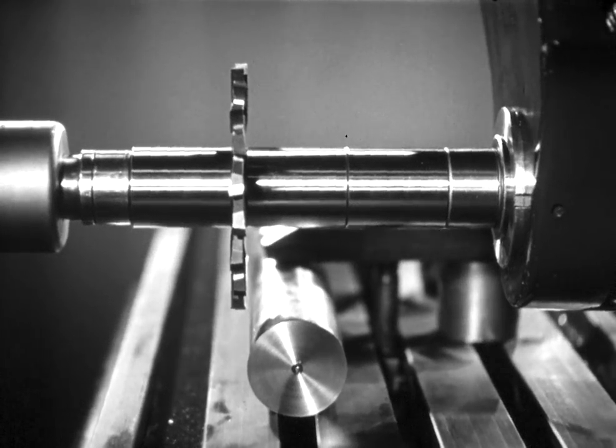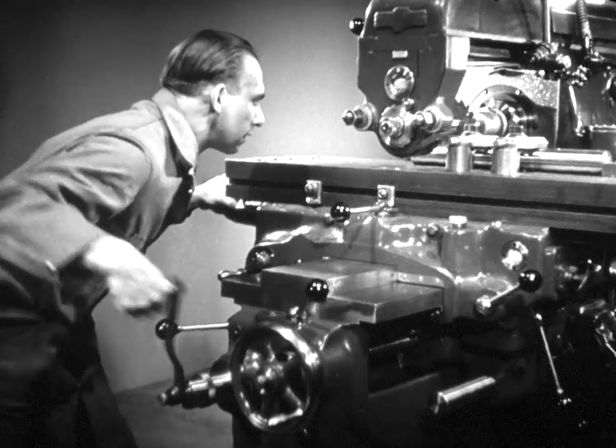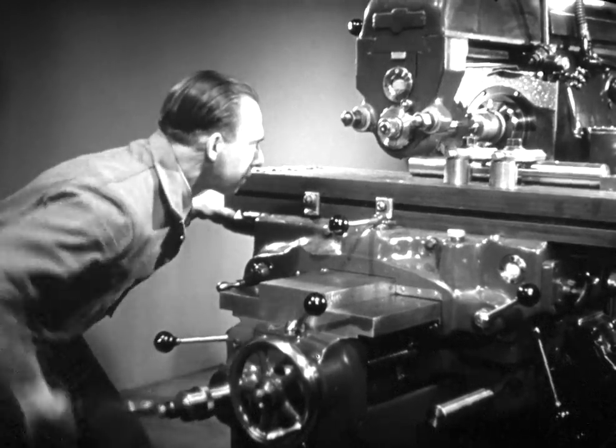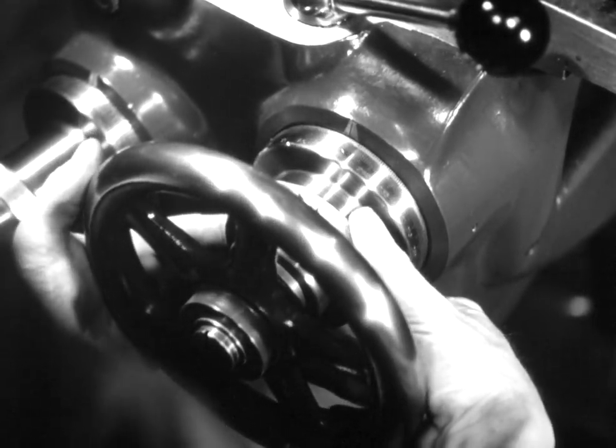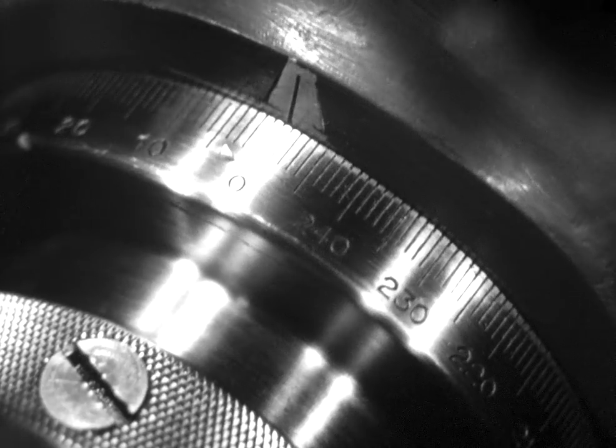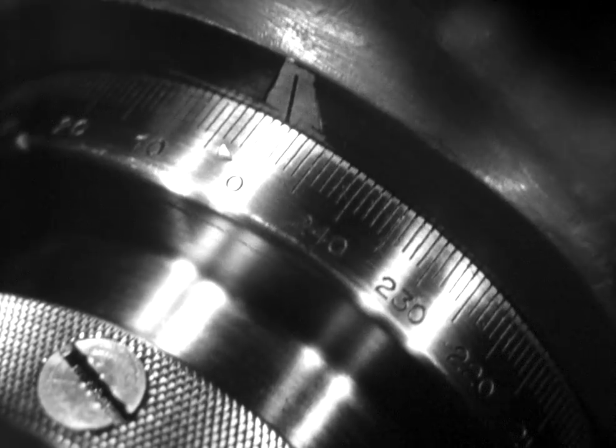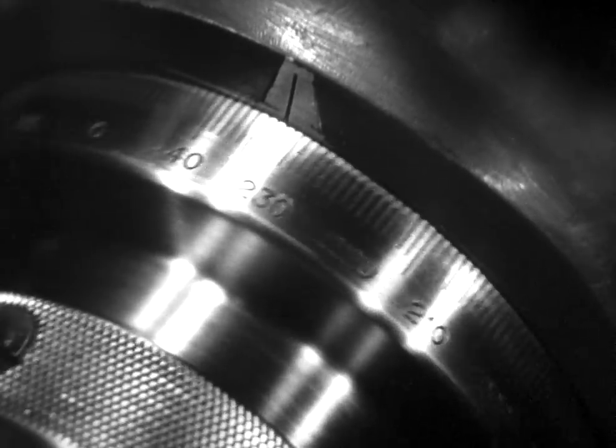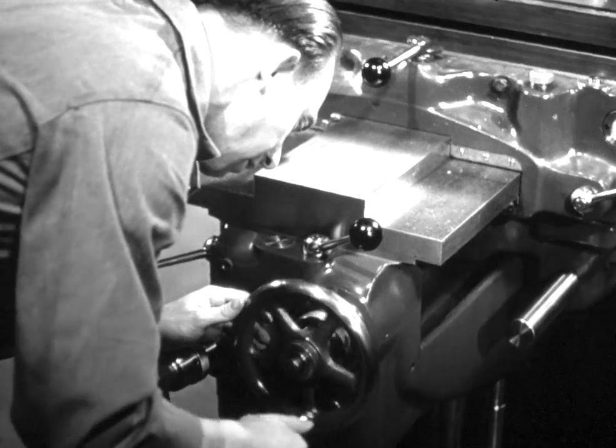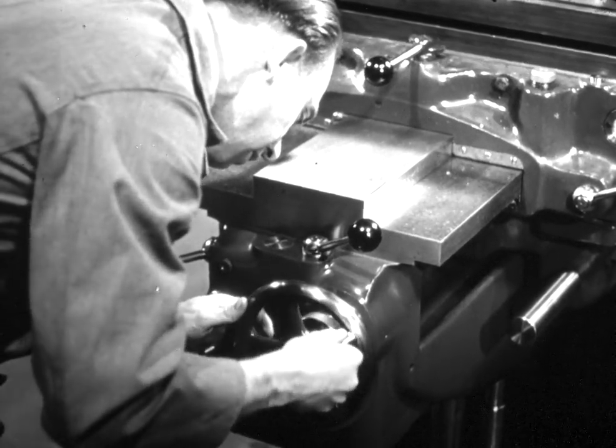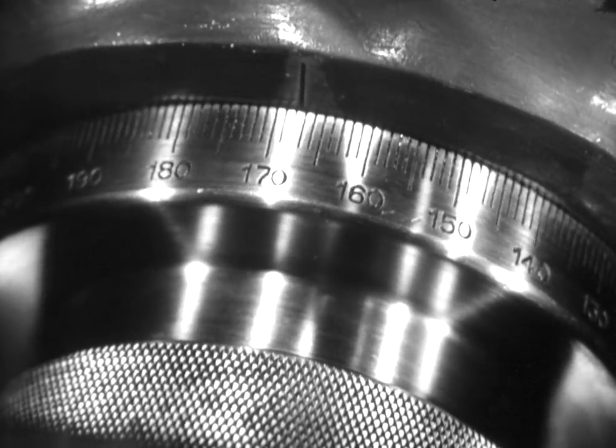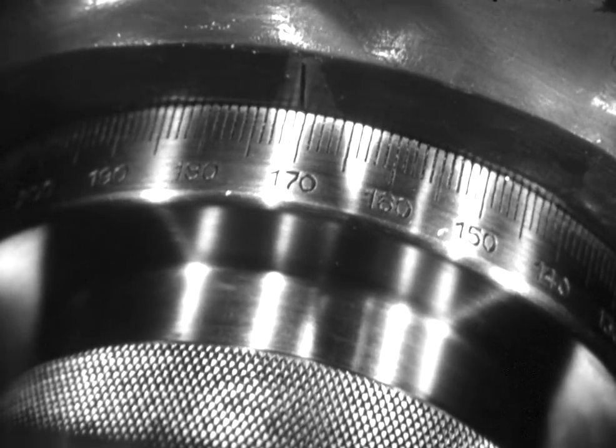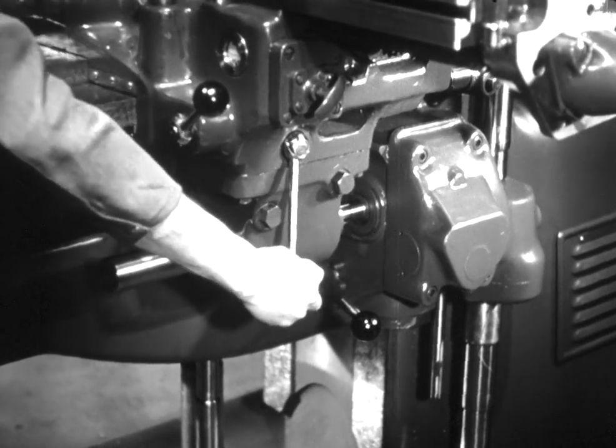First, lower the table so that the cutter will clear the work. Then the table can be moved in the desired distance accurately by means of the index dial on the cross-feed screw. Set the index dial at zero. It is composed of two hundred and fifty spaces, each of which represents a table movement of one-thousandth. Since one full turn of the screw advances the table two hundred and fifty-thousandths, or one-quarter inch, it must be turned four complete revolutions, plus one hundred seventy-one spaces to move the table the desired one and one hundred seventy-one thousandths. Lock the table in this position.